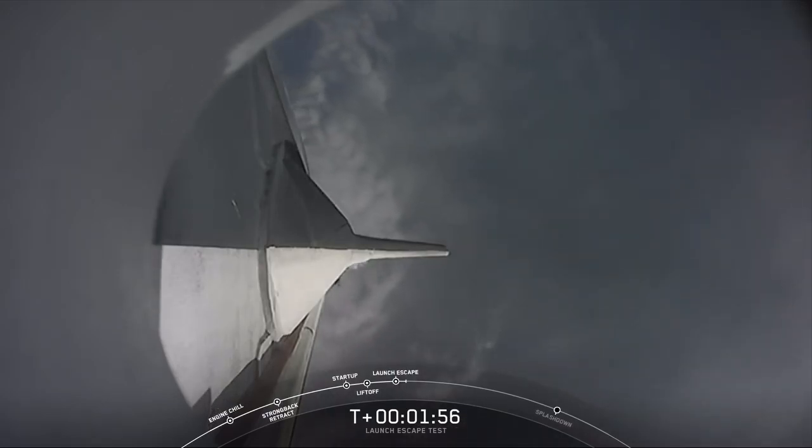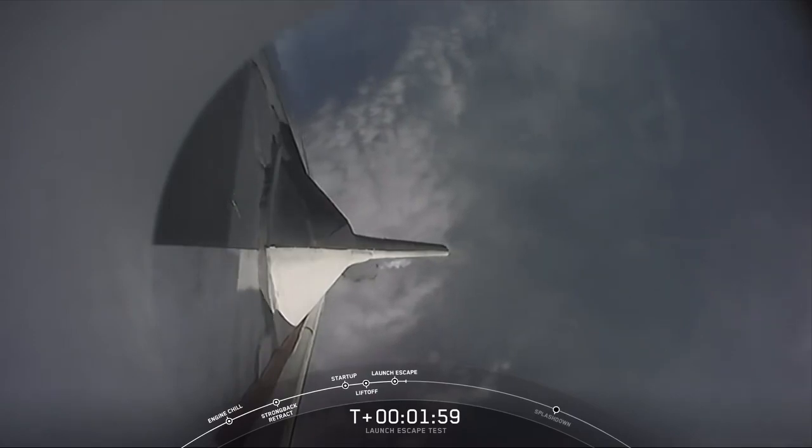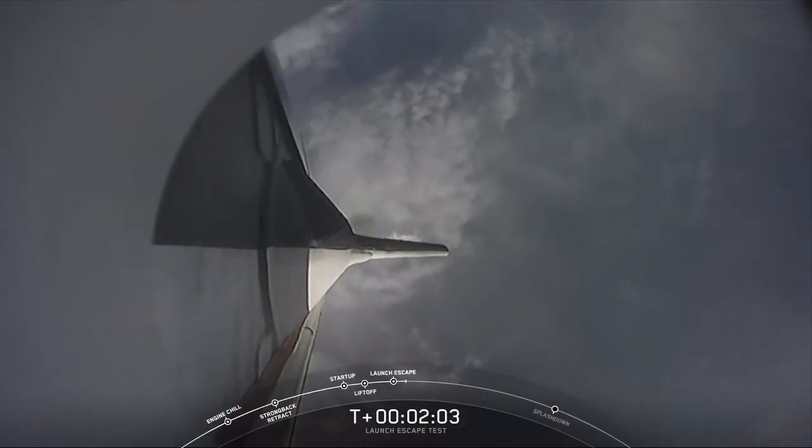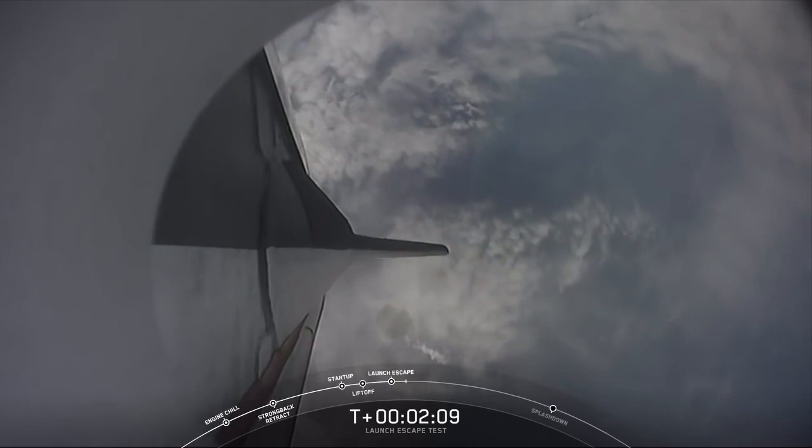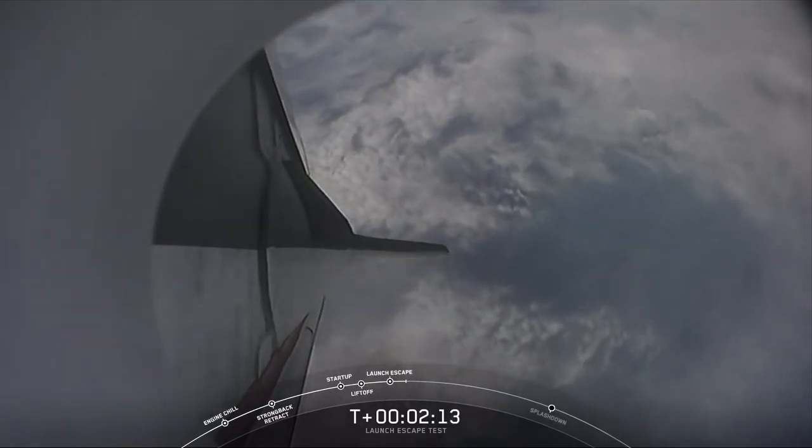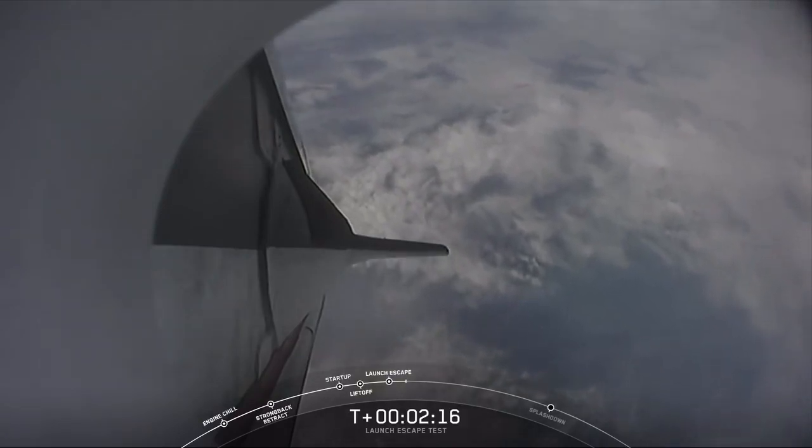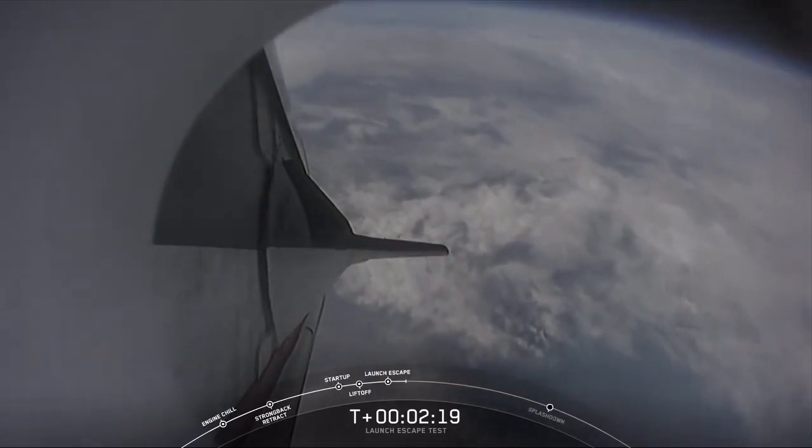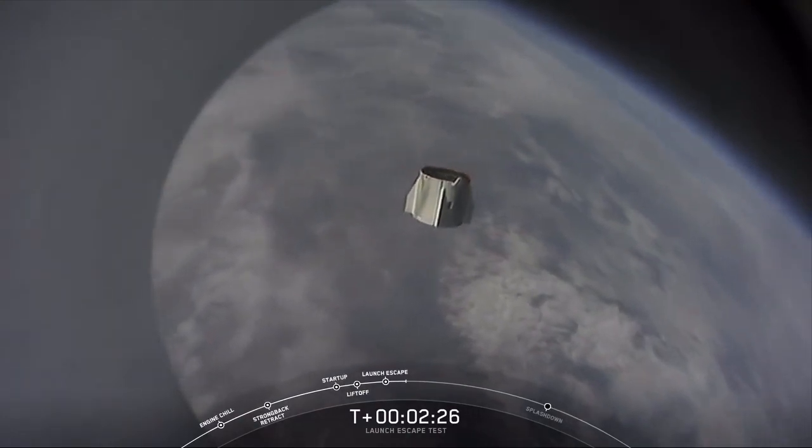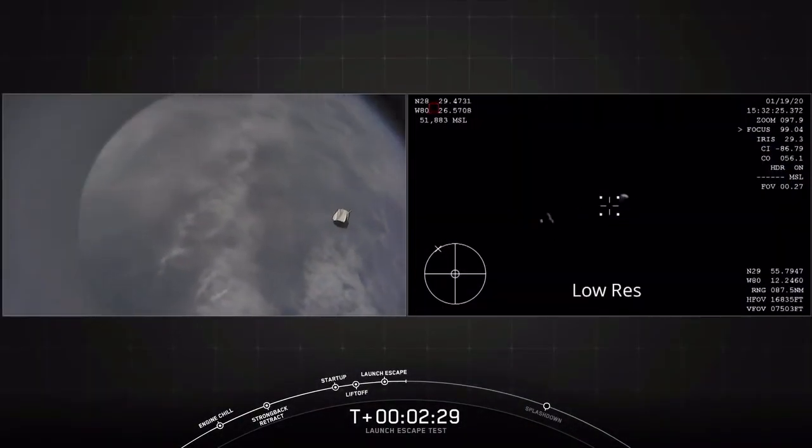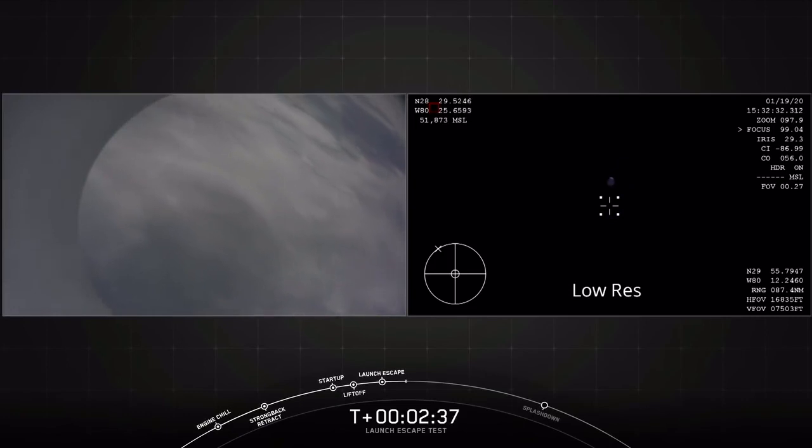The next milestone we have coming up at 2 minutes, 25 seconds. We're expecting to see the trunk jettison. So that claw that connects the trunk to the capsule is going to separate, allowing Dragon to separate from the trunk. That's coming up in 15 seconds. And we do have the report, loss of telemetry from Falcon 9 first stage. And there you just saw the trunk jettison. Some really loud cheers here in Hawthorne, California. This test is looking great so far.